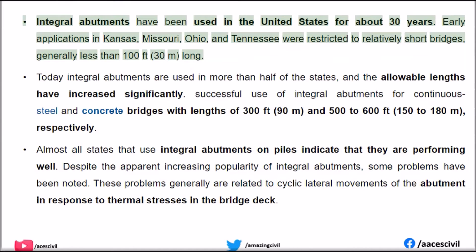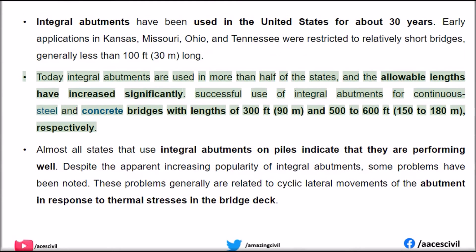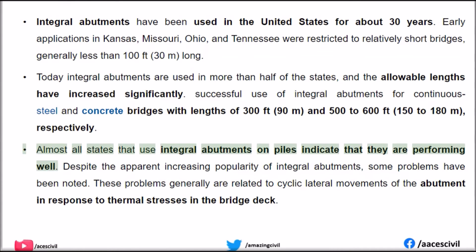Integral abutments have been used in the United States for about 30 years. Early applications in Kansas, Missouri, Ohio, and Tennessee were restricted to relatively short bridges, generally less than 100 feet long. Today integral abutments are used in more than half of the states, and the allowable lengths have increased significantly. Successful use of integral abutments includes continuous steel and concrete bridges with lengths of 300 feet (90 m) and 500 to 600 feet (150 to 180 m), respectively. Almost all states that use integral abutments on piles indicate that they are performing well.